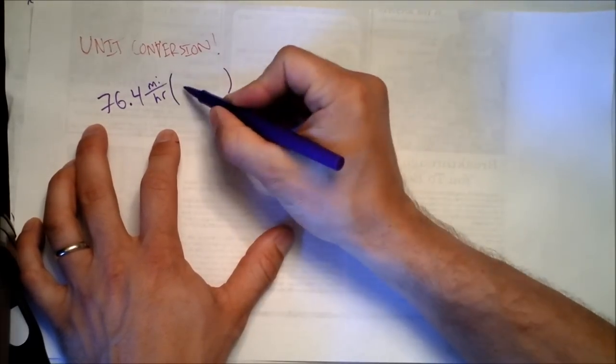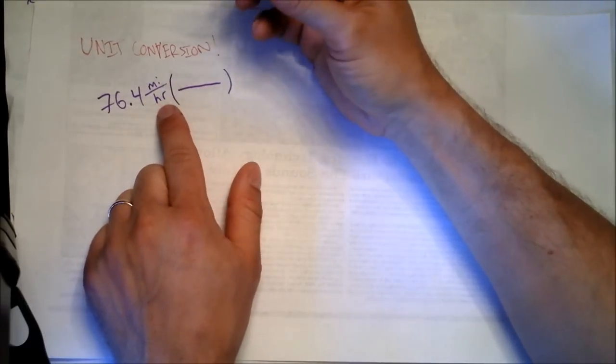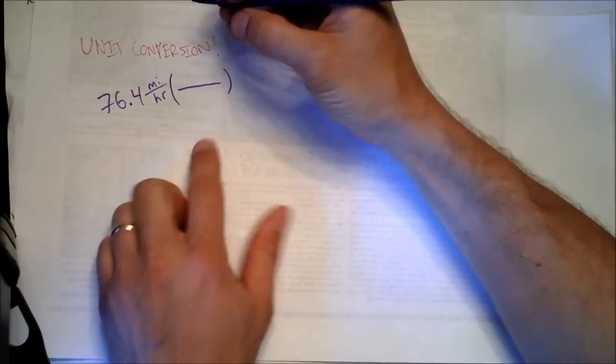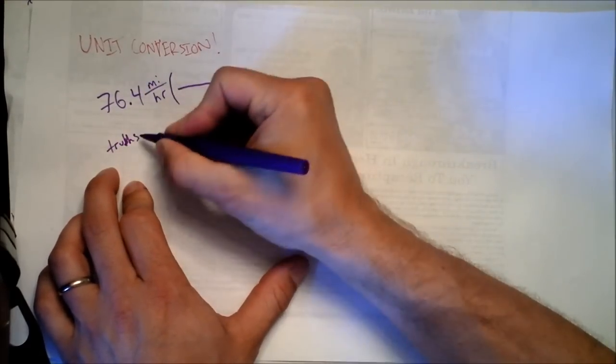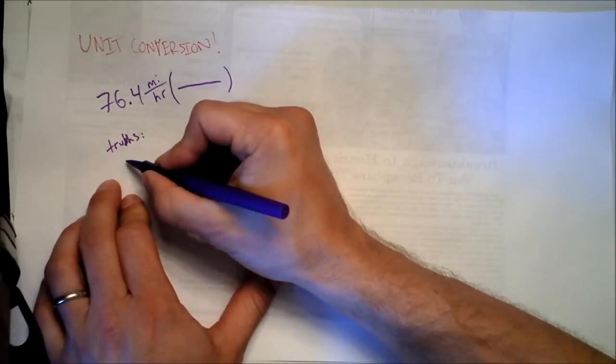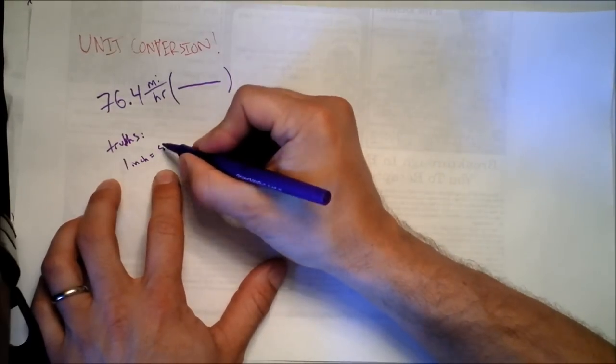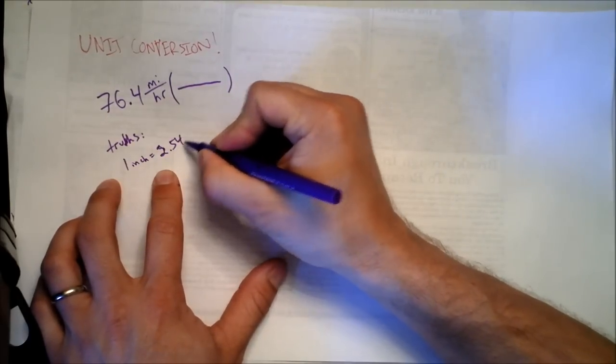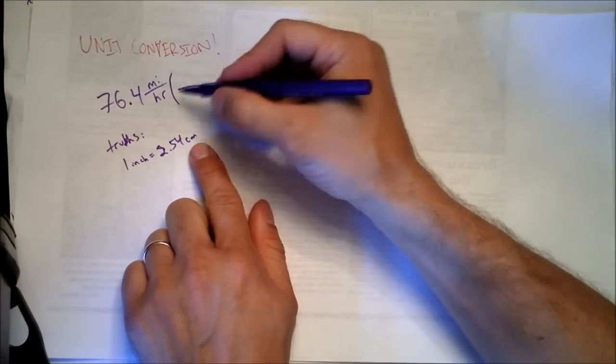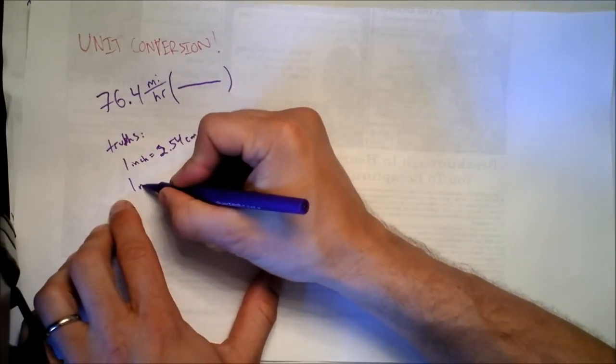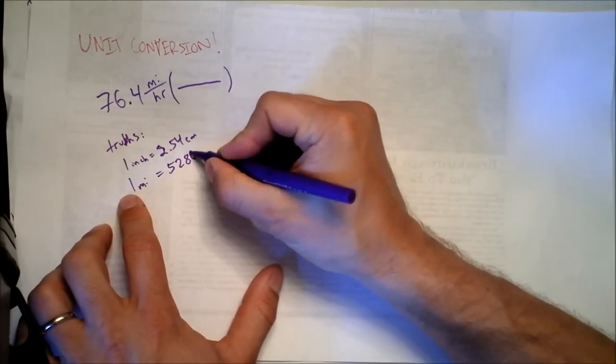We need to get out of miles per hour and into meters per second. All we can do to this number is multiply by one, and we need to write one in a funny way. First, let's say we'll try to get out of miles. I happen to know - here are some truths. I'll write down the truths down here. The truths are that one inch is equal to 2.54 centimeters. If we can get down to an inch, we'll be fine. I also know that one mile is 5,280 feet and one foot is equal to 12 inches.